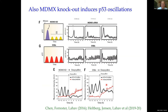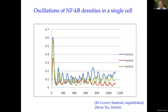Markus Covert sent me beautiful traces of NF-κB in single cells. The period here is two to three hours for NF-κB, and P53 is more three to five or six hours. These are called ultradian oscillations — not circadian, not fast ultradian.